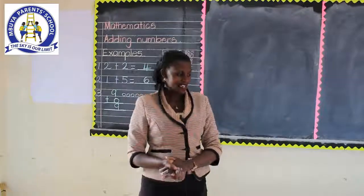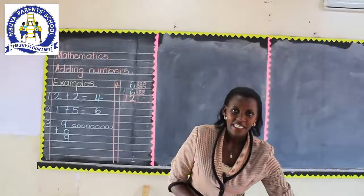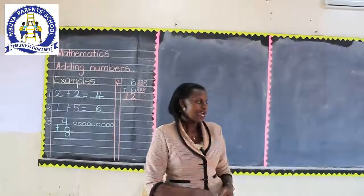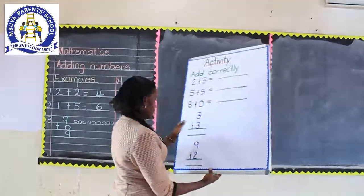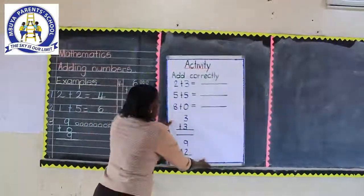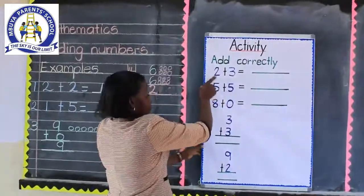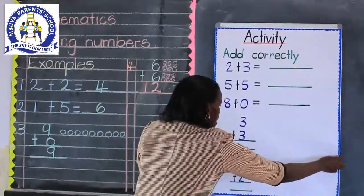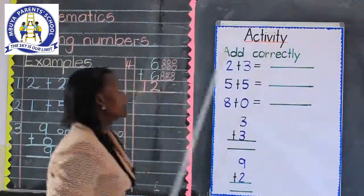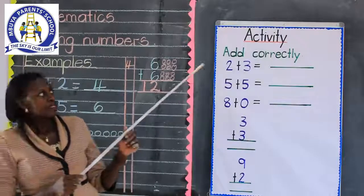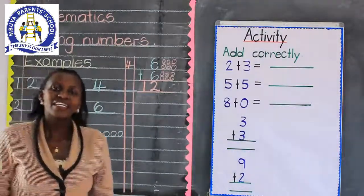Thank you so much for being good children. I would like you to do this activity. Are we together? You get your book and do for me this activity, following what we have done. This is our activity. It is saying, add correctly. Add correctly.